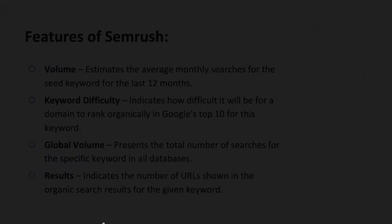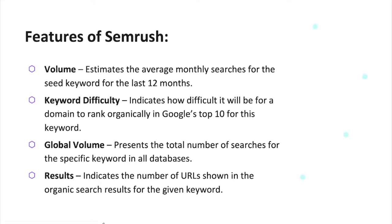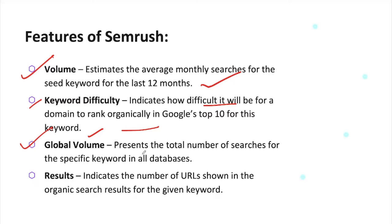Let me explain what basic features are available in this paid tool and why you should choose it. First, we have search volume — you can estimate the average search volume for a seed keyword for the last 12 months. Next is keyword difficulty, which indicates how difficult it will be for your domain to rank organically in Google's top 10 for a keyword. Then we have global volume, which shows the total number of searches for a specific keyword across all databases.